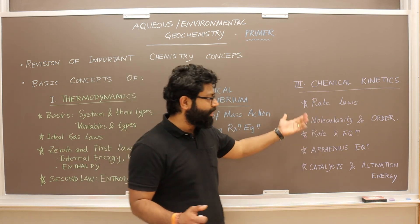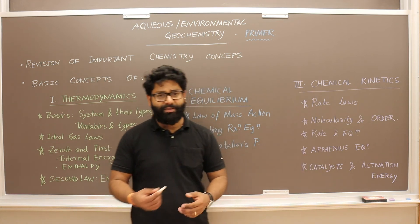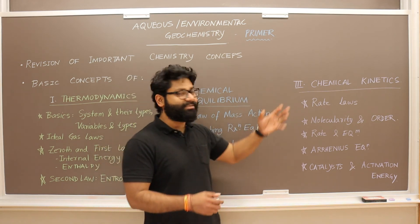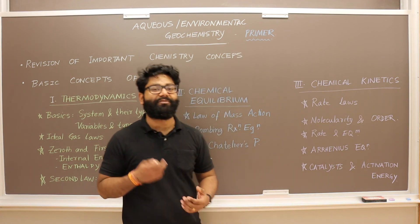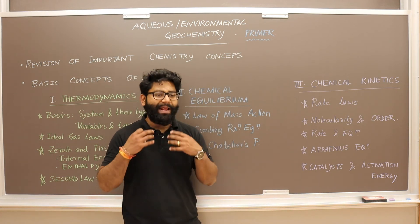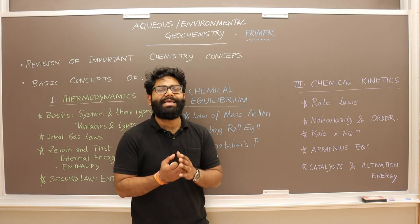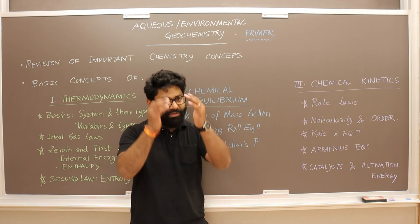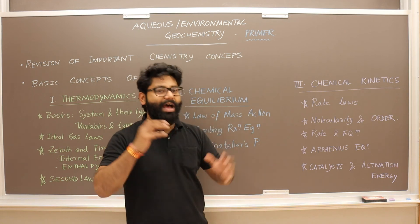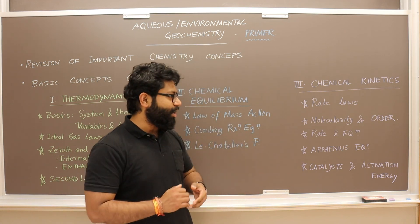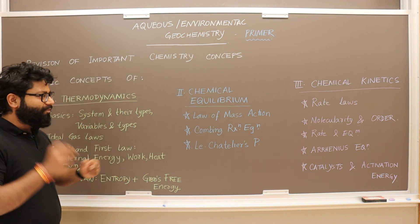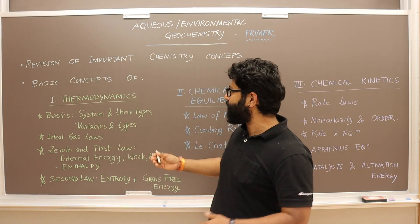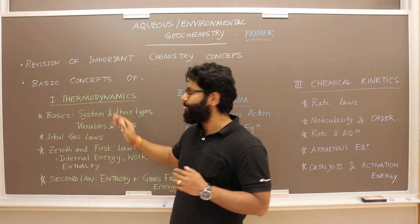We'll define basic terms like molecularity and order, then move to the important Arrhenius equation and see how changes in temperature affect reaction rates. Related to that, we'll study the effect of catalysts — what exactly happens when you use a catalyst, how it speeds up a reaction by decreasing the activation energy. So with this small overview of what we're trying to achieve in this primer to aqueous or environmental geochemistry, let's start with the first topic: thermodynamics.